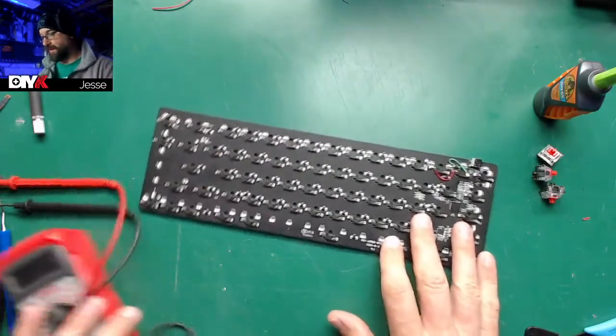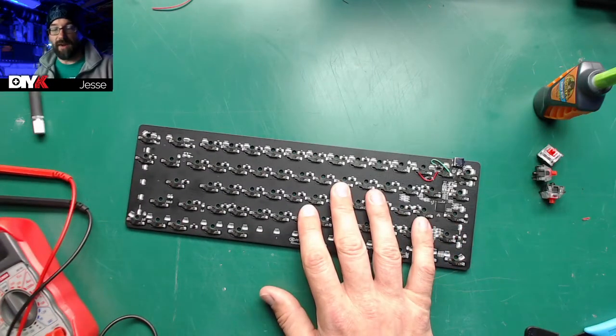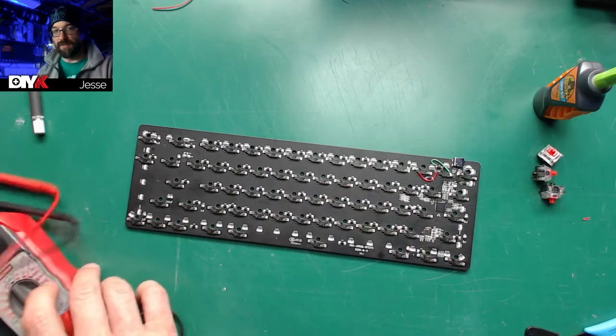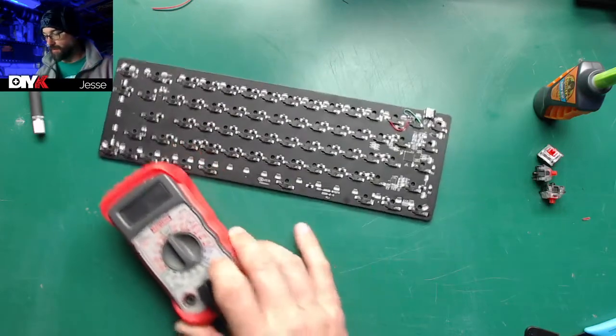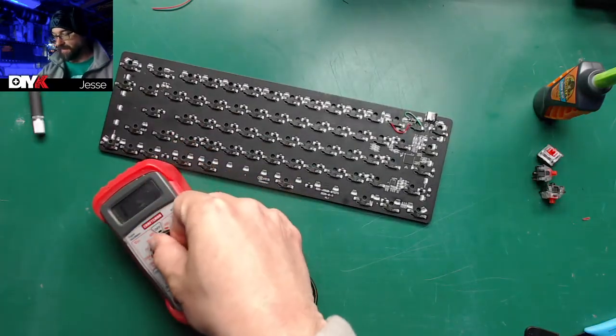Once that was done, it was time to figure out how the rows and columns were arranged so we can make the correct repair. For that you just need a multimeter. What we're going to do is take the multimeter and switch it to the continuity test, which is usually down here in the bottom.